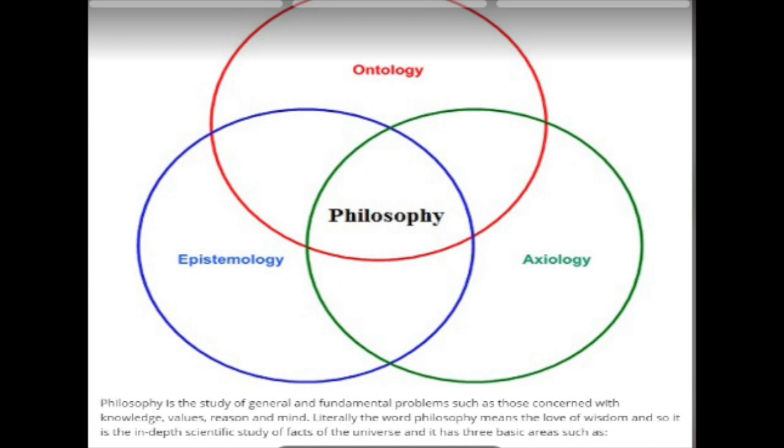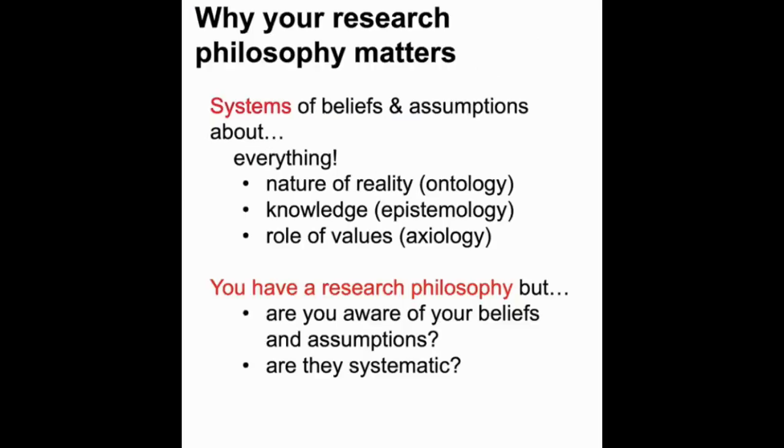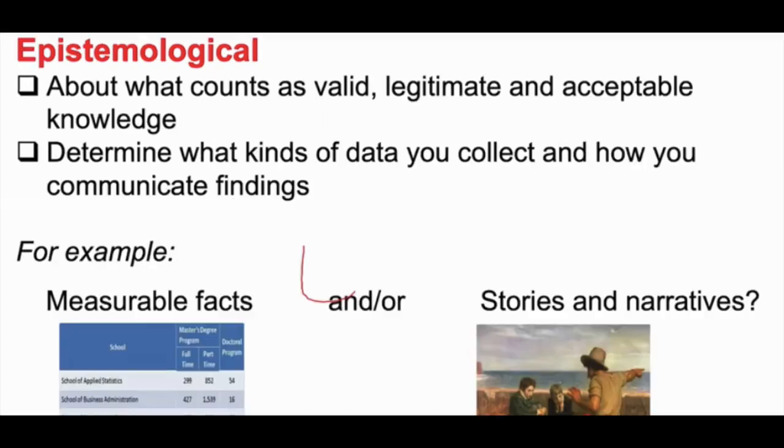Hello friends, today we are going to discuss the research onion proposed by Saunders in 2007. At the simplest level, Saunders Research Onion describes the different decisions that we need to take while developing research methodology, whether it is for your dissertation, thesis, or research writing.